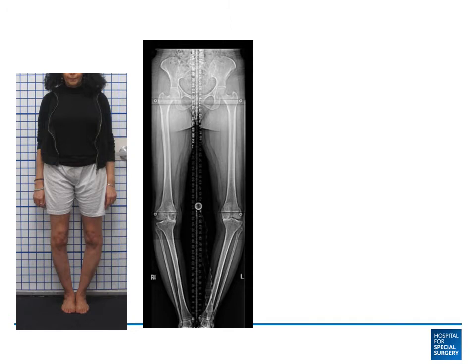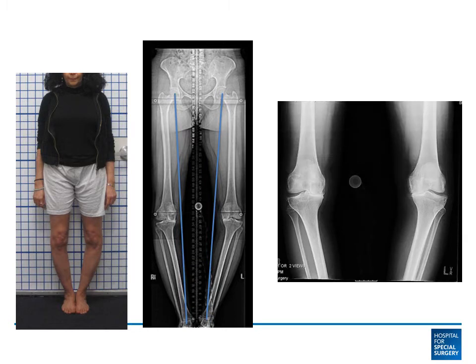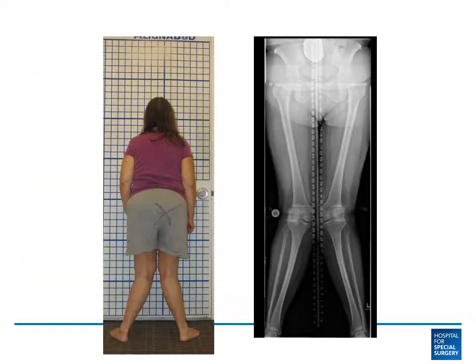Deformity overloads the respective compartments of the knee. For that reason, people with bow leg deformities develop medial compartment arthritis of the knee, as you can see here with bone on bone changes noted on the medial or inside part of the knee. And people with knock knee deformities develop arthritis on the outside part of the knee, or the lateral compartment.